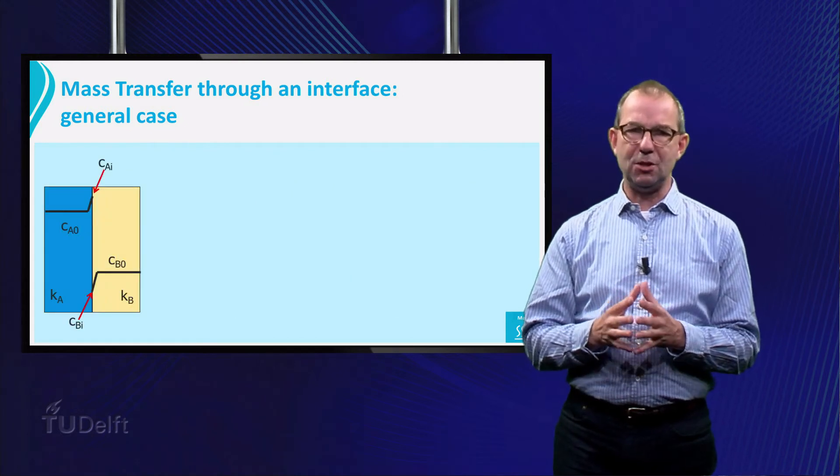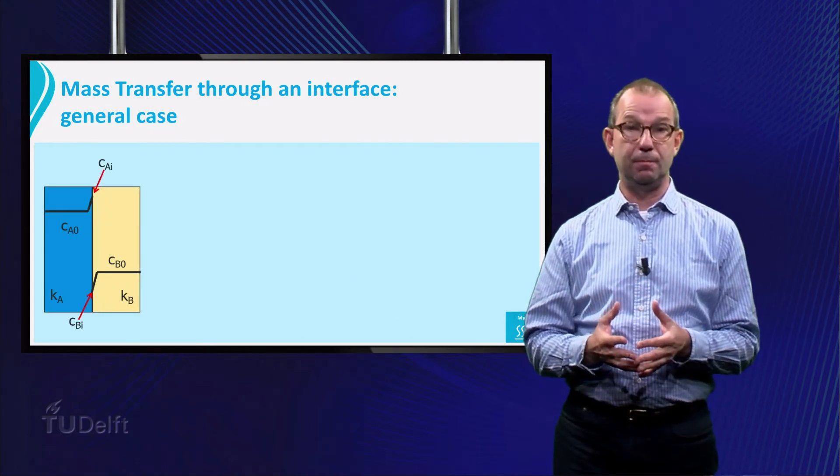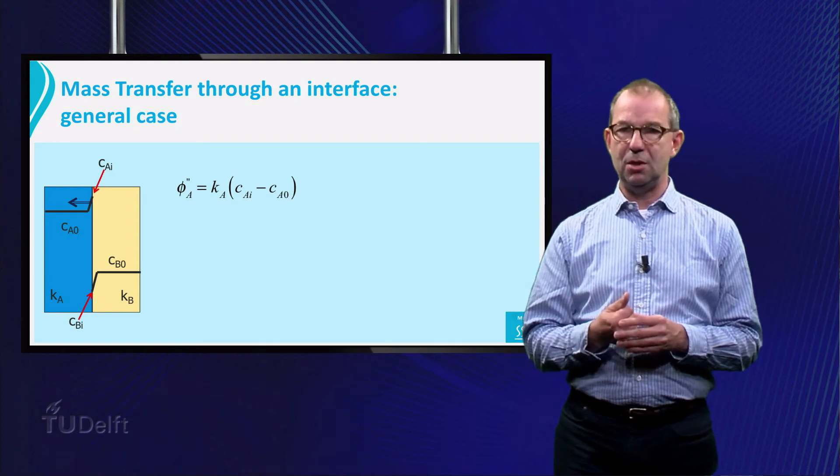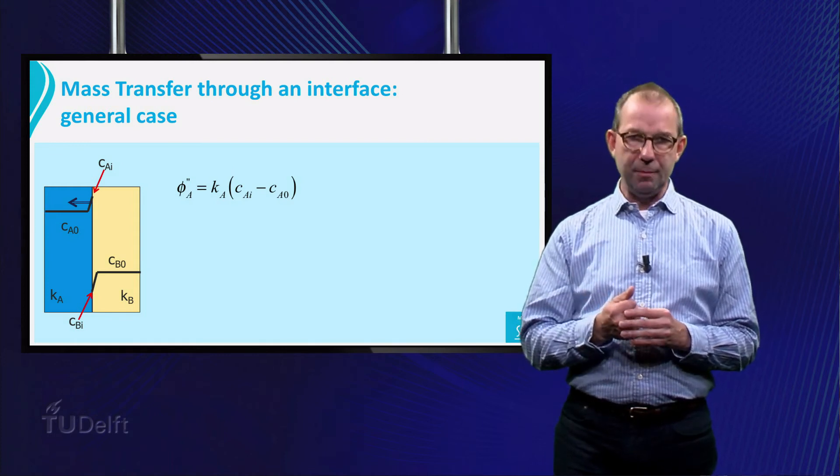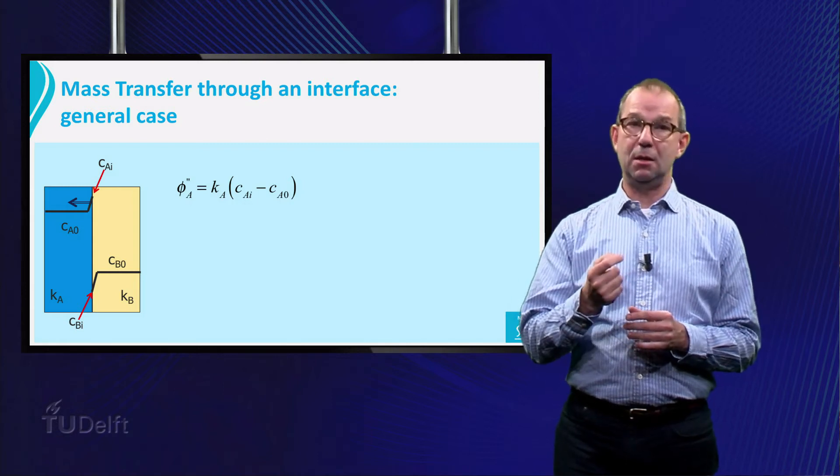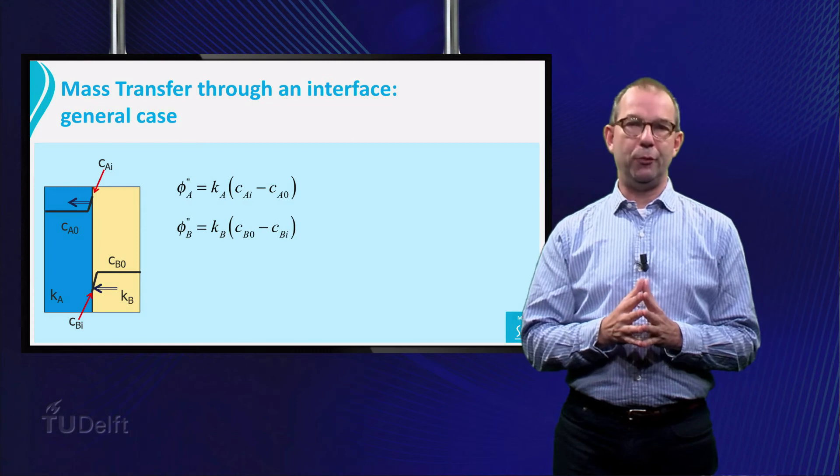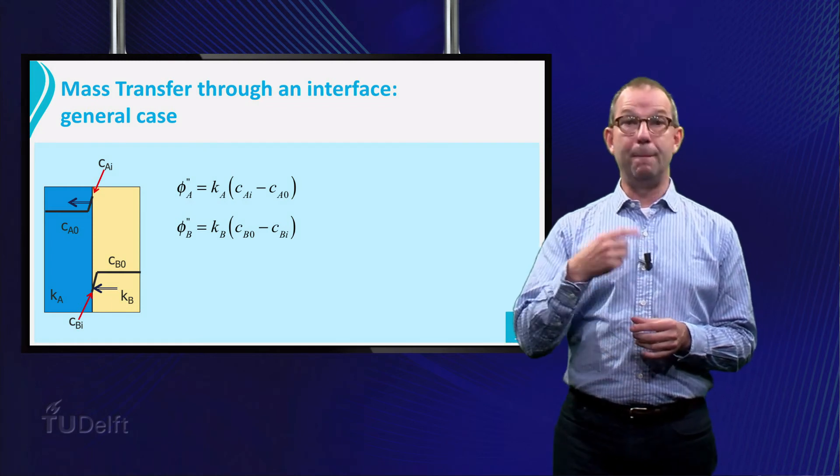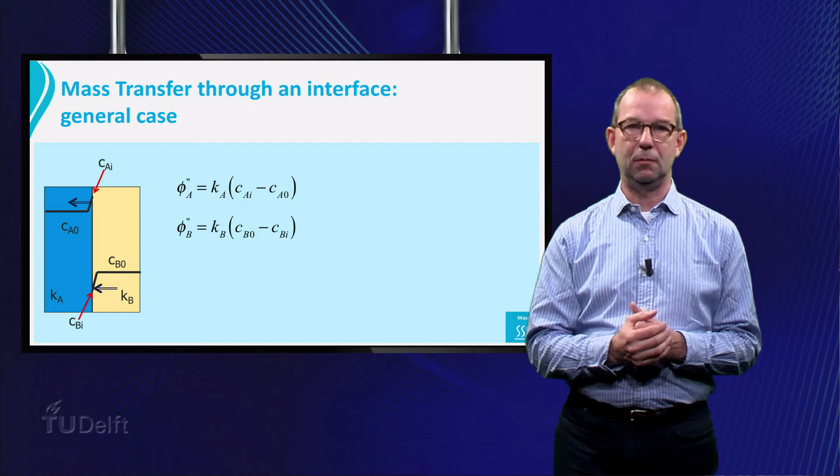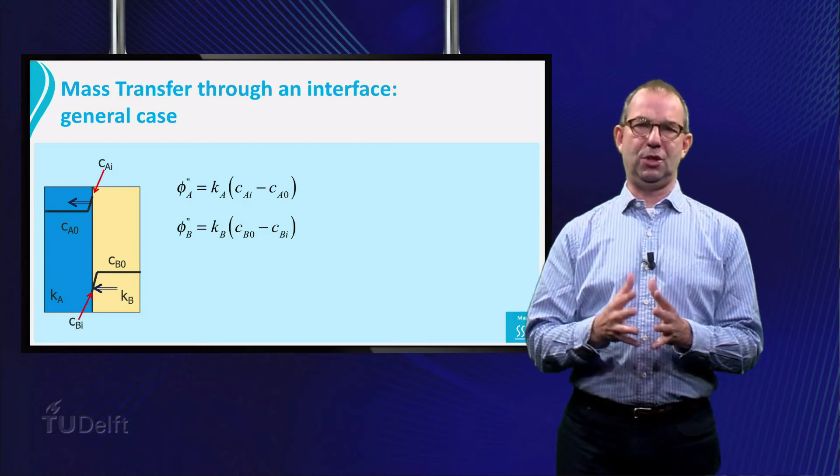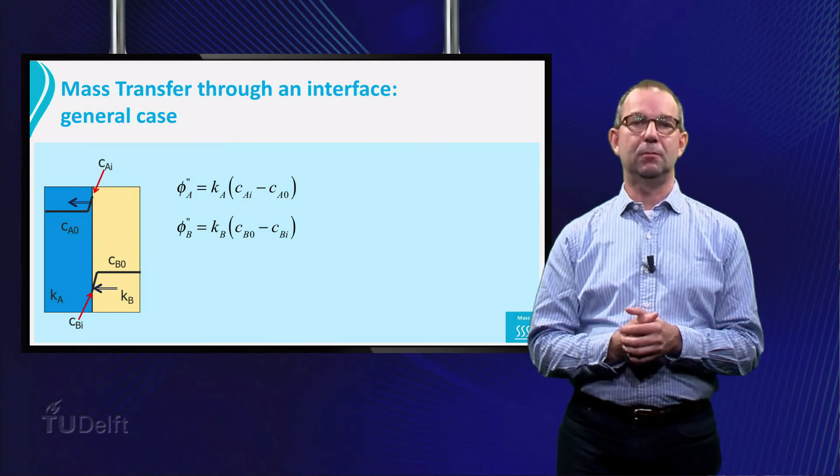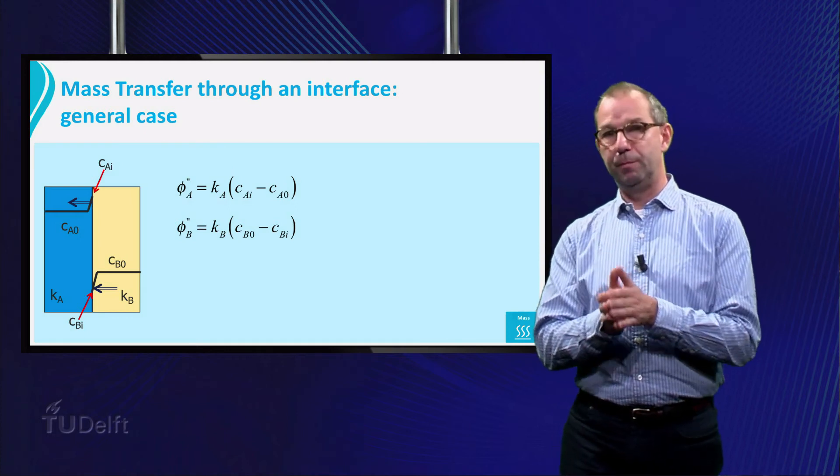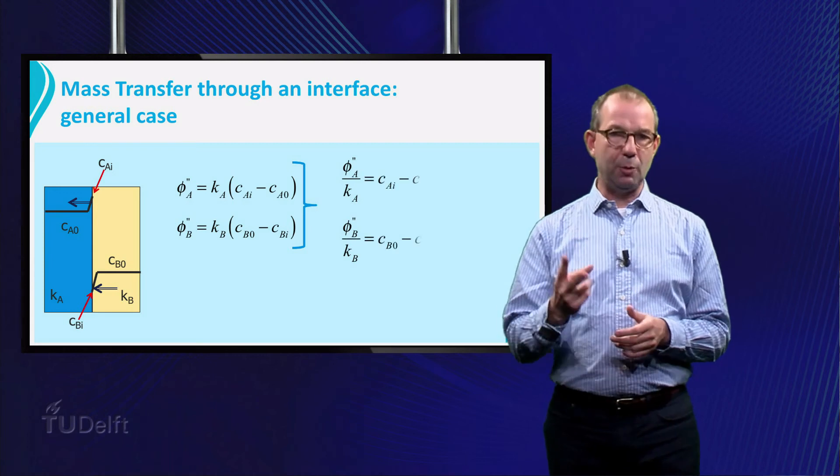We can write the mass transfer in each phase in the usual ways. For phase A, this is phi sub A double prime is K sub A times C sub A I minus C sub A O. Likewise for phase B, phi sub B double prime is K sub B times C sub B O minus C sub B I. We need to eliminate the interface concentration as we don't know them a priori. All we know are the bulk values C A zero and C B zero. Thus we rewrite the two equations. See the sheet.